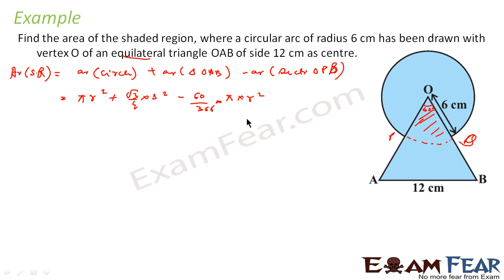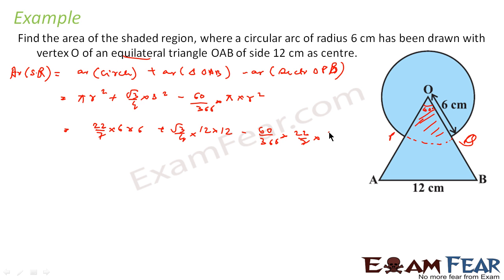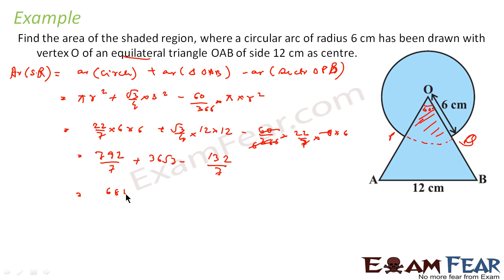Let's put the values: pi is 22 by 7, r is 6, so area of circle is 22 by 7 into 6 into 6. Plus root 3 by 4, side is 12, so 12 into 12. Minus 60 by 360 into 22 by 7 into 6 into 6. This becomes 792 by 7 plus 36 root 3 minus 132 by 7. Solving further, you get 660 by 7 plus 36 root 3. This is the answer.